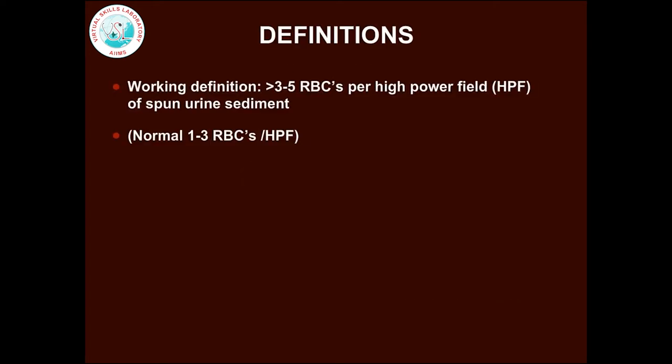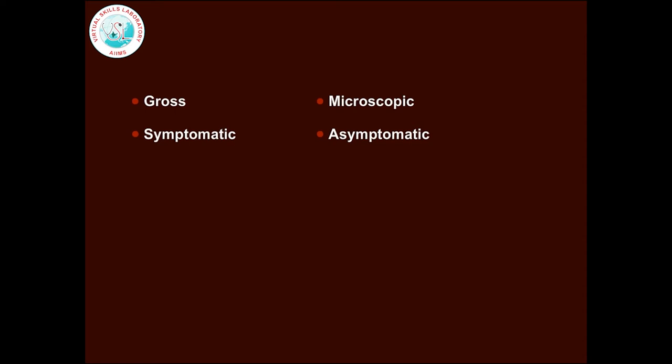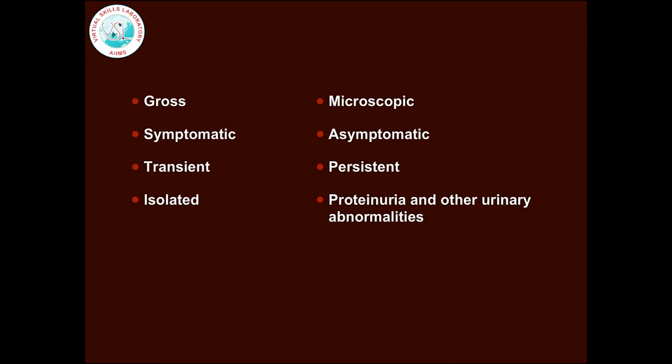Hematuria is defined as the presence of more than 3-5 red blood cells per high power field of urine sediment in 3 consecutive centrifuged specimens obtained at least 1 week apart. Hematuria can be gross or microscopic, symptomatic or asymptomatic, transient or persistent, isolated or associated with proteinuria and other urinary abnormalities.